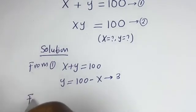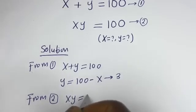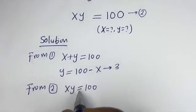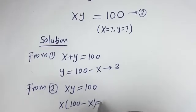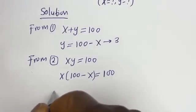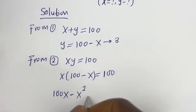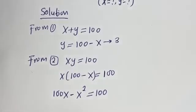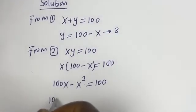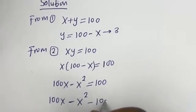From equation 2, xy is equal to 100. We can substitute for y using equation 3. Here we have x times bracket (100 minus x) is equal to 100. Let's open the bracket: x multiplied by 100 is 100x, minus x multiplied by x is x squared, equals 100. So we have 100x minus x squared minus 100 is equal to 0.